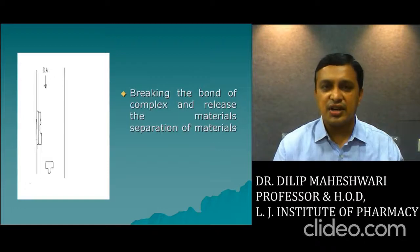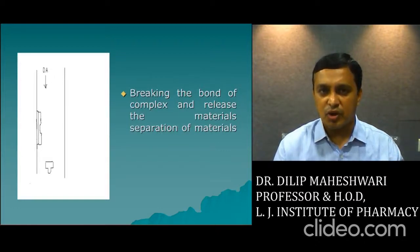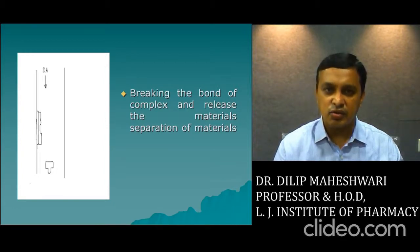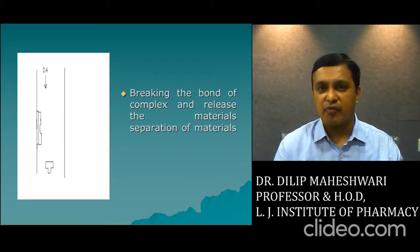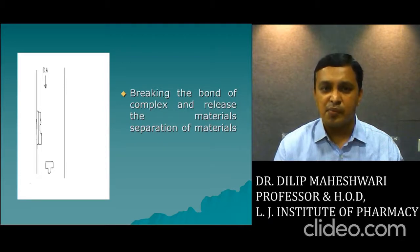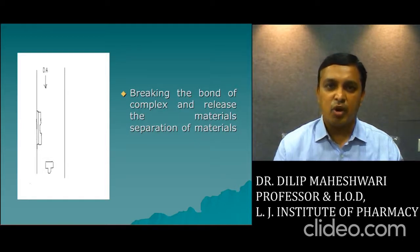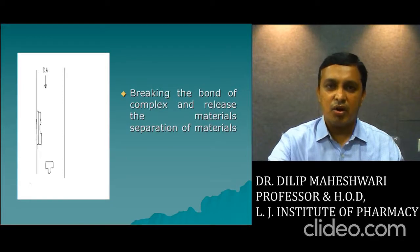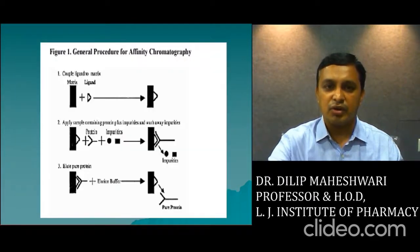Once this complex is formed, it cannot be detached unless you use some dissociating agents, and so you get very purified compounds. Different types of solvents and buffers are used, such as potassium thiocyanate, as displacement agents. When you change the pH of the environment of your complex, your compound can easily detach from the immobilized ligands and you get a very purified compound at the bottom of the column. This is the mechanism or principle of separation in affinity chromatography.